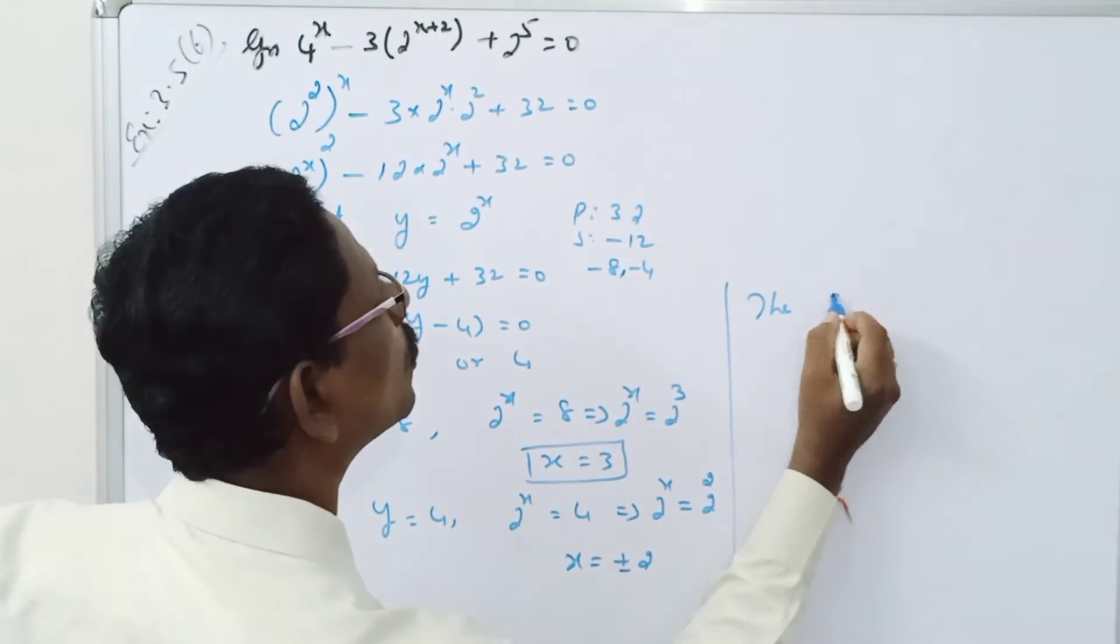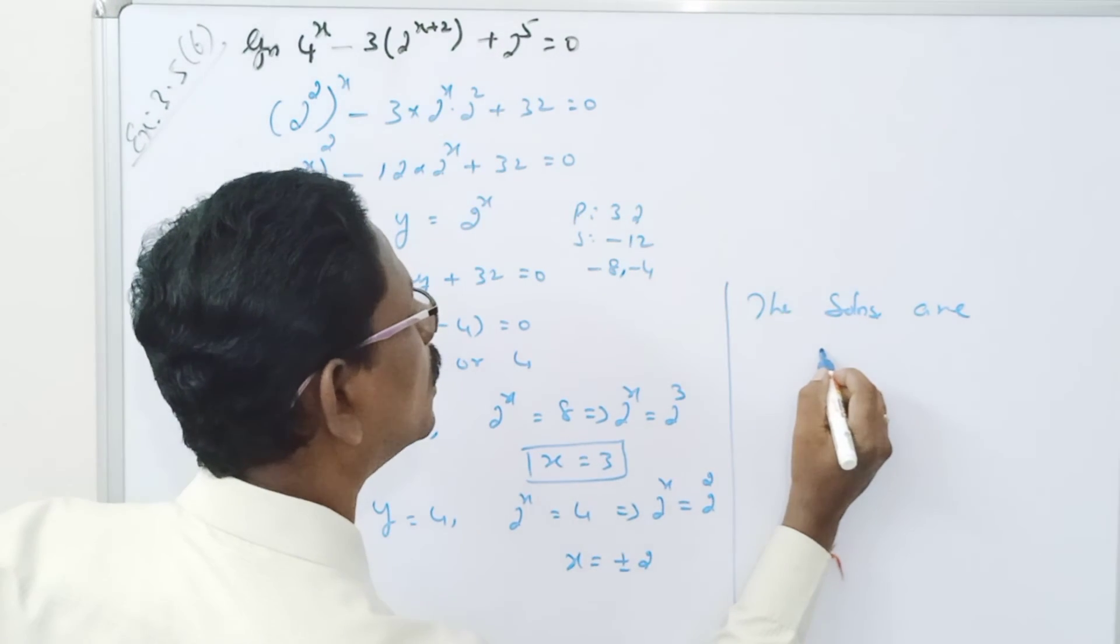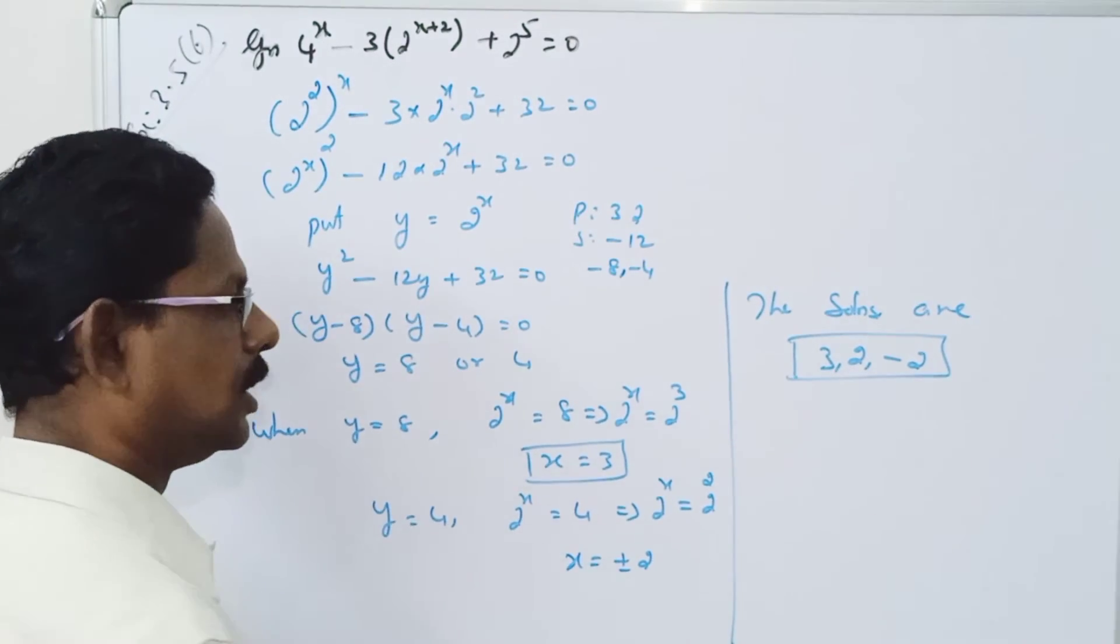Therefore, the solutions are 3, 2, minus 2 are the solutions of the equation.